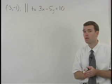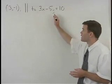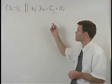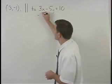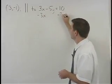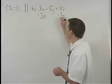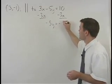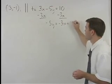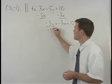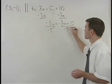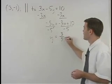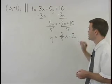Remember, in y equals mx plus b form, y is by itself on the left side of the equation. So our first step is to subtract 3x from both sides to get negative 5y equals negative 3x plus 10. Then divide both sides by negative 5 to get y equals 3 fifths x minus 2.